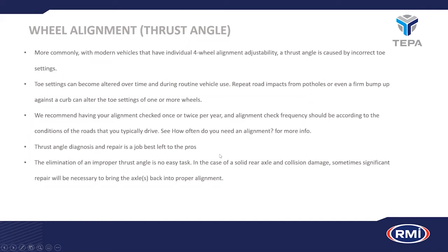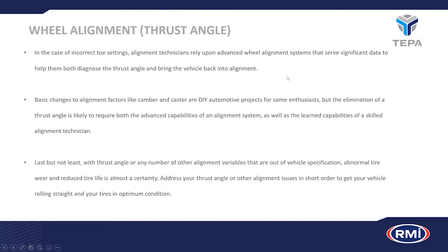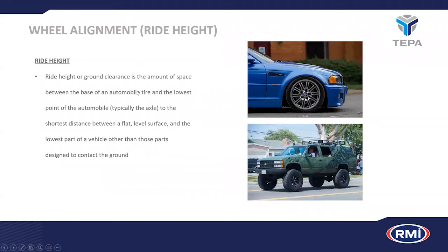Thrust angle diagnosis is a job left to the professionals, best done on a 3D alignment machine that measures all angles across the suspension. In the case of incorrect toe adjustments, those need to be set first. Changes to alignment factors like caster and camber are not really DIY projects because of the need for the 3D system to measure the thrust angle and rear toe simultaneously.